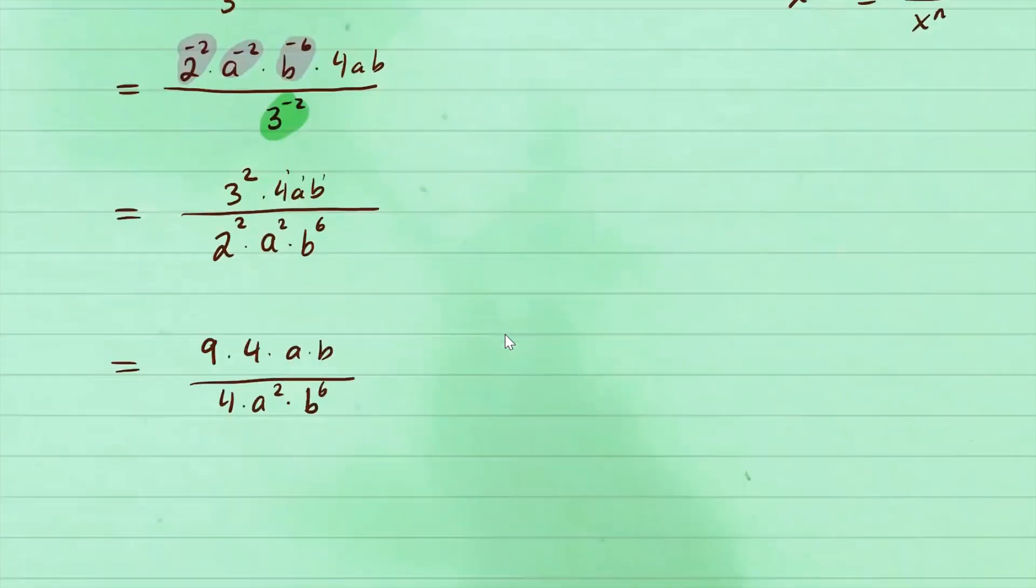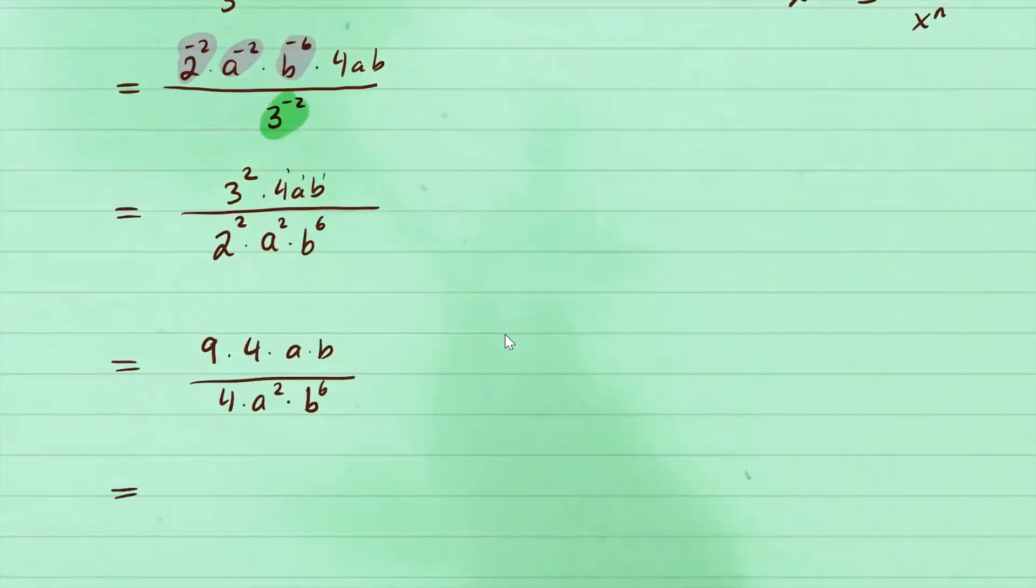And now let's go ahead and simplify further. Here I can cancel the fours. And here with the a's, using the laws we wrote down before, we can subtract their exponents. So you'll have the following.